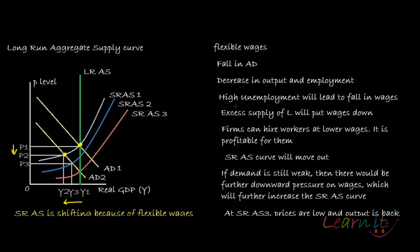There is excess supply of labour at Y2, and this excess labour will start accepting low wages. You might ask: they are getting unemployment benefits, so why would they accept low wages? But unemployment benefits are given only for a certain time period — they are not given forever. When their period of unemployment benefits runs out, they will have to accept low wages and start working even at low wages.